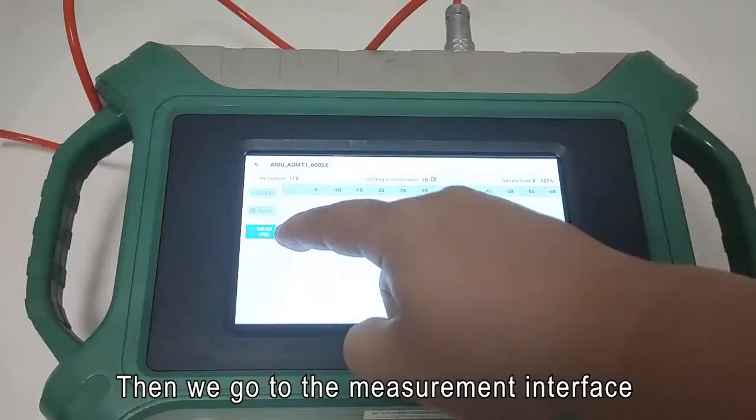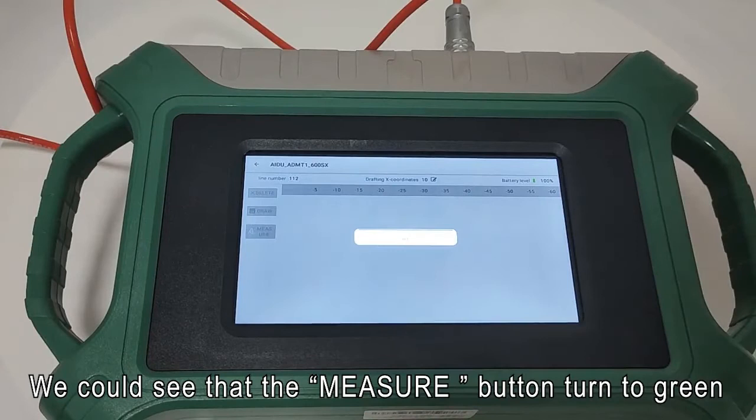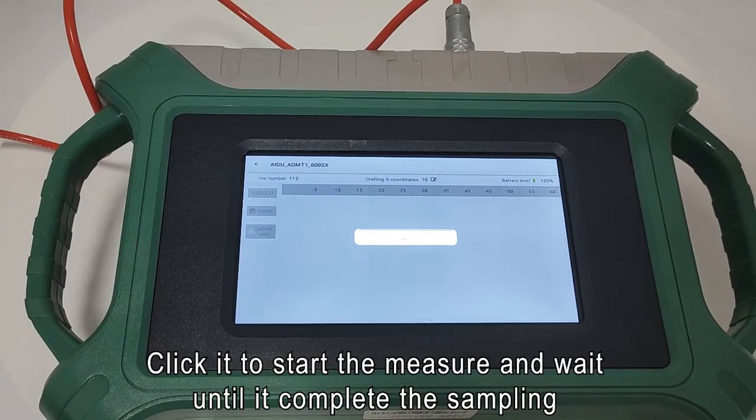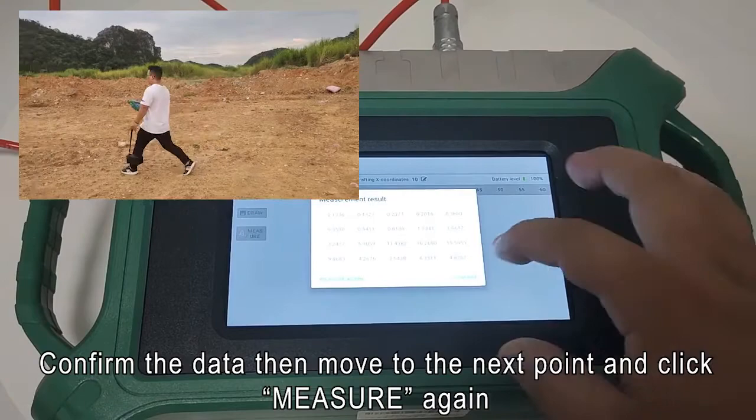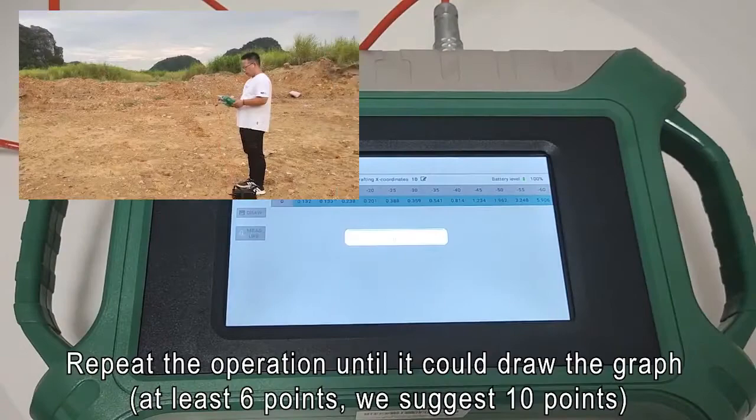Then we go to measurement interface. We could see that the measure button turned to green. Click it to start measure and wait until it completes the sampling work. Confirm the data then move to the next point and click measure again.